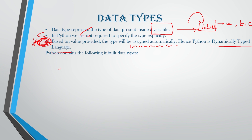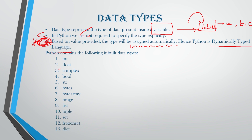Python contains the following inbuilt data types: int, float, complex, bool, str (string), bytes, bytearray, range, list, tuple, set, frozenset, dict, and None. These are the 14 built-in data types that do not require any explicit type specification — they will be automatically assigned.